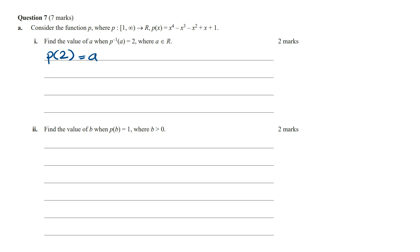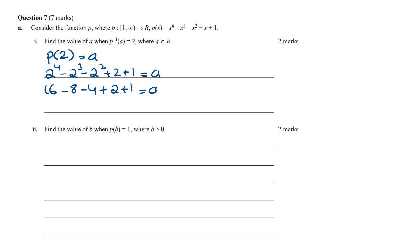Substituting 2 into p of x, this is going to be 2 to the power of 4 minus 2 to the power of 3 minus 2 squared plus 2 plus 1, which is going to equal a. So this is 16 minus 8 minus 4 plus 2 plus 1, giving us 7. Therefore the value of a is 7.